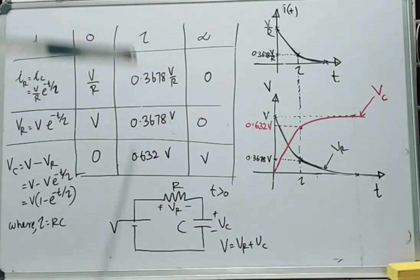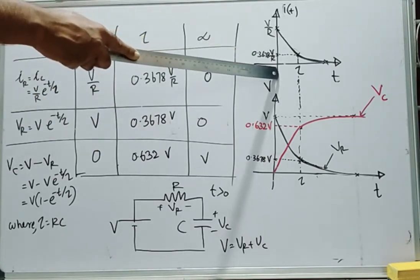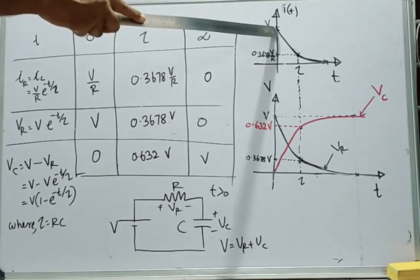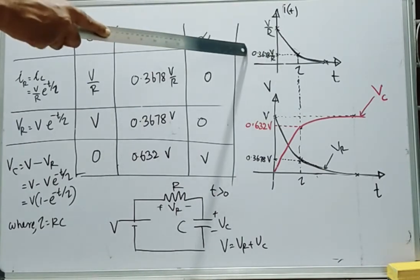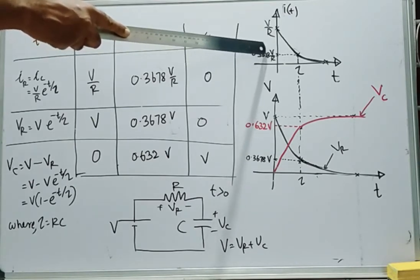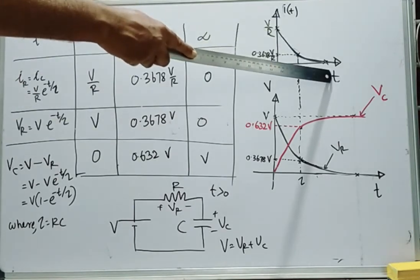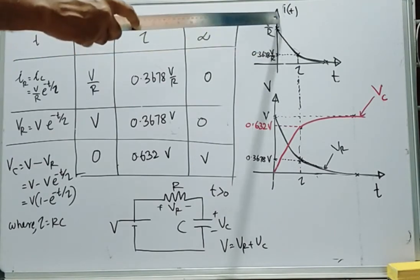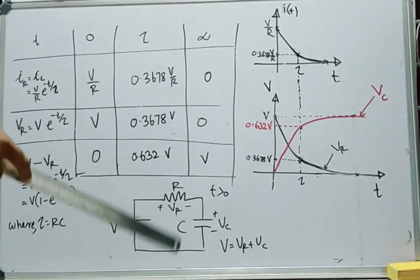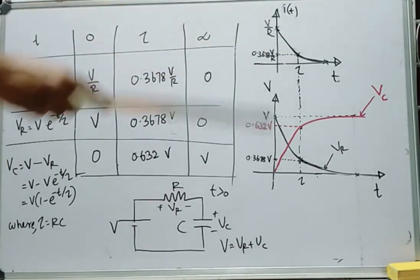Now let's plot these values on a graph. First, let's plot the current. At T equal to 0, the value is V/R. At T equal to tau, the value is reduced to 0.3678 V/R. And at T equal to infinity, its value is 0. From this graph, it is clear that current through this circuit is exponentially decaying and finally that current dies out.